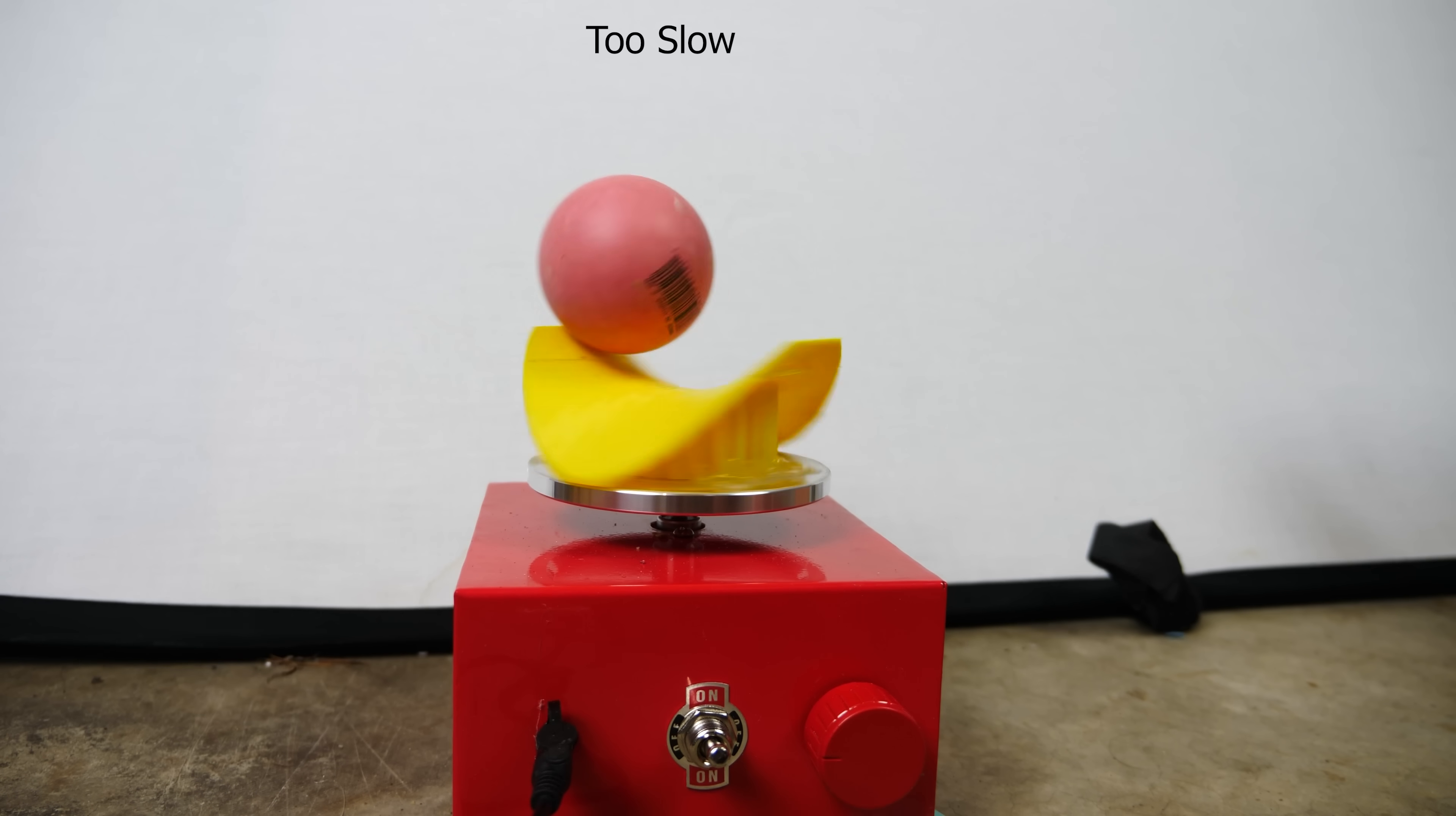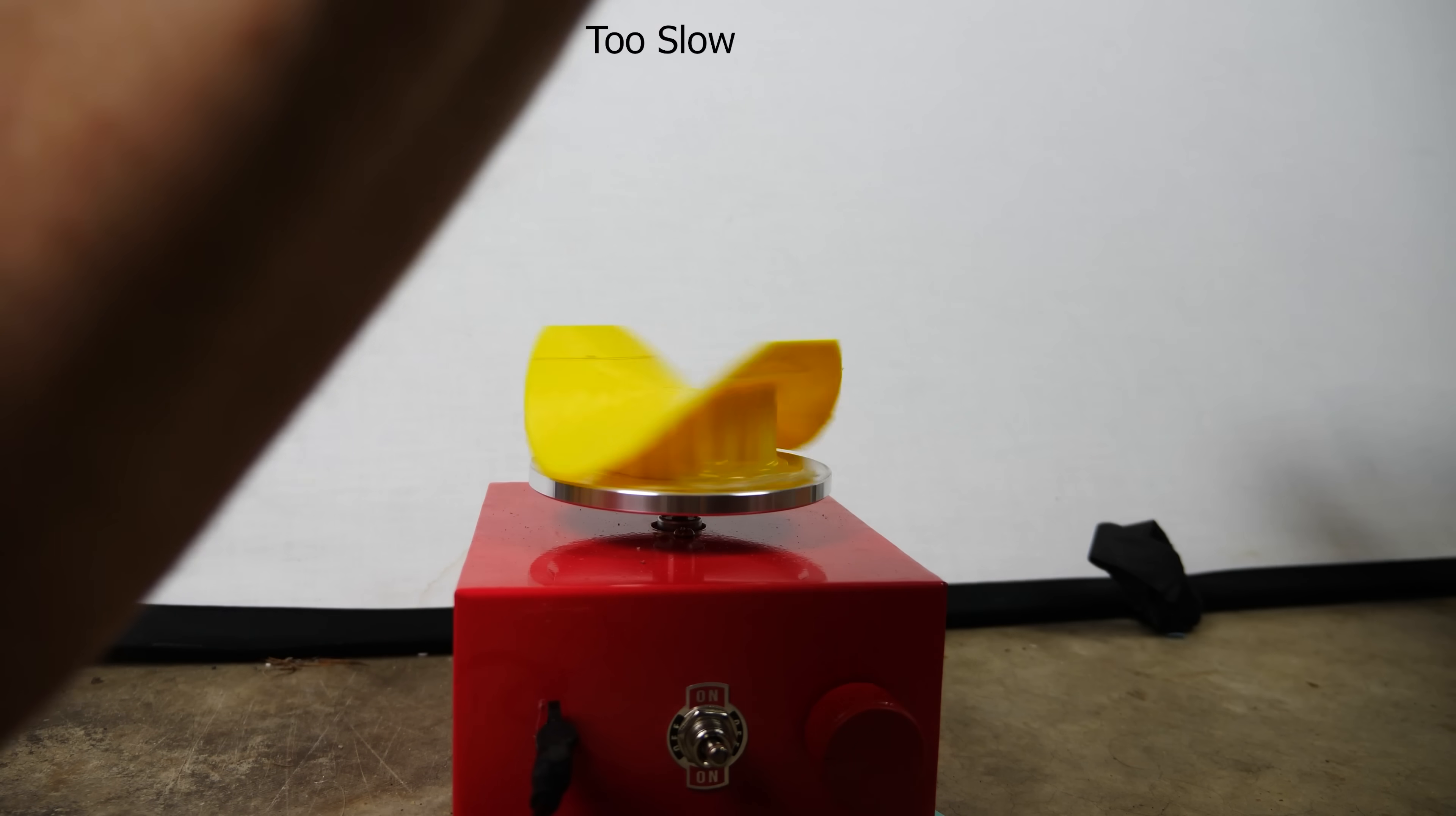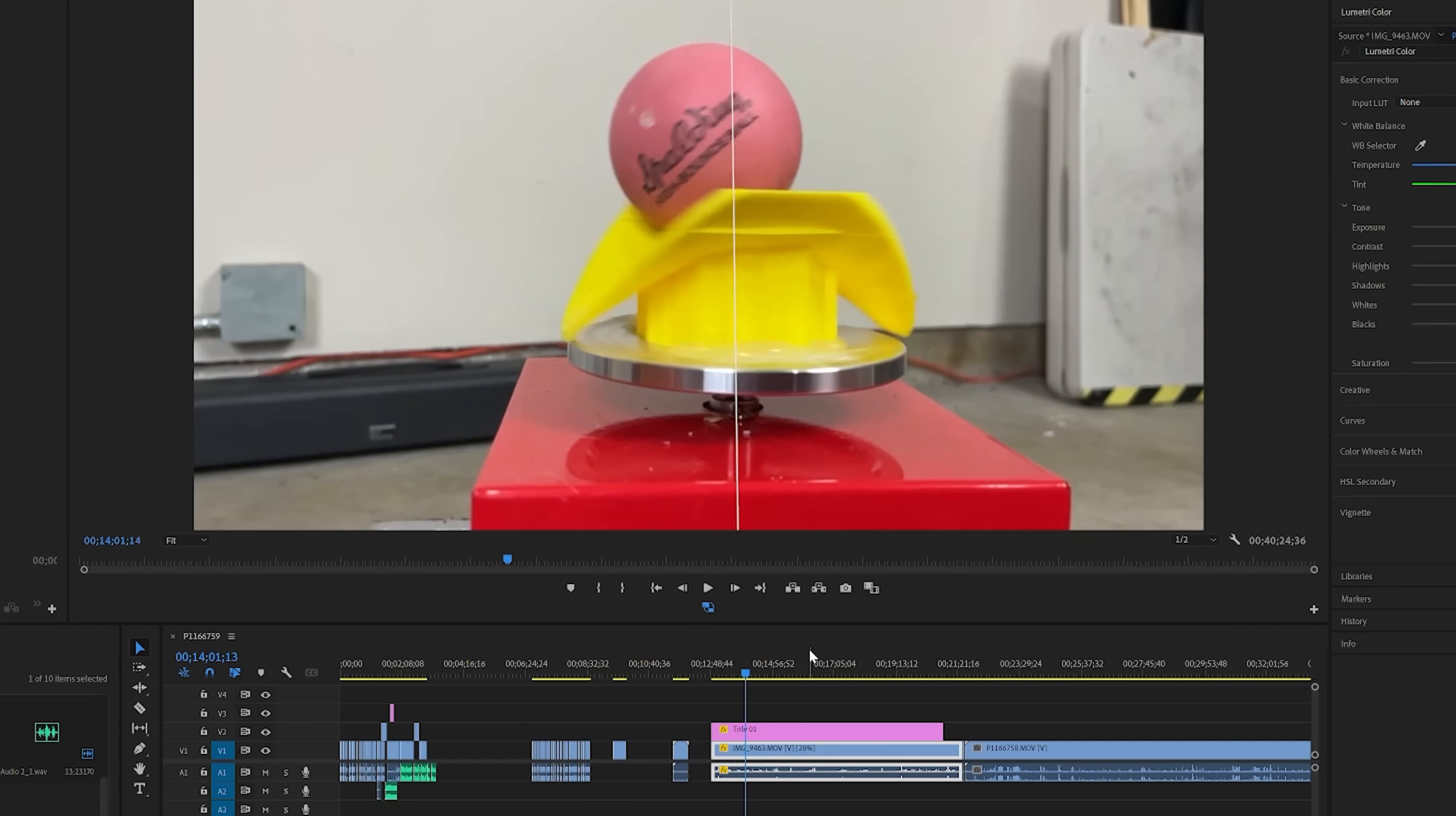That's because as it's spinning there's a Coriolis effect that pulls the ball outward effectively lengthening the natural period of the ball. So using some trial and error I found that the correct natural frequency of the ball to be only about one hertz.